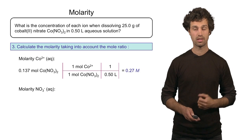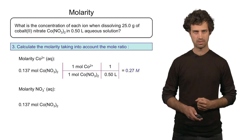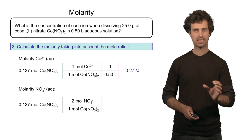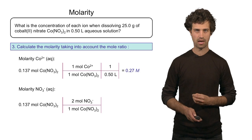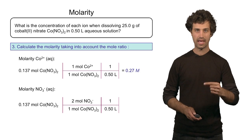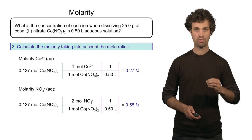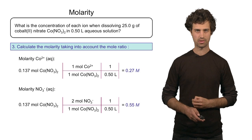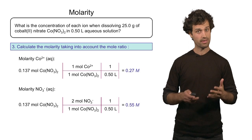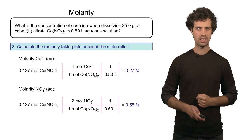Let's do the same for the nitrate anions. Starting again with 0.137 moles of cobalt-2 nitrate and converting to the number of moles of nitrate anions — there are two nitrate anions for each one mole of the compound — then dividing by the volume of 0.5 liters, I find 0.55 molar of nitrate anions. Note that the concentrations of the cation and the anions are different, because you generate different amounts of cations and anions when you dissolve this salt in water.